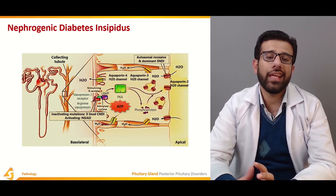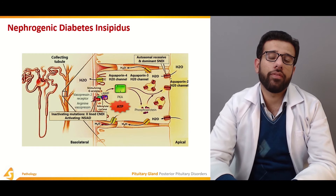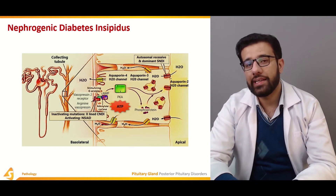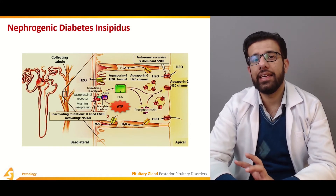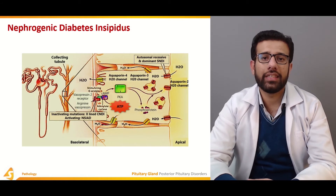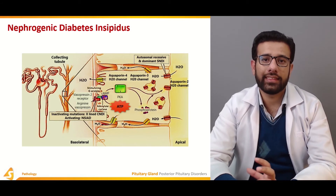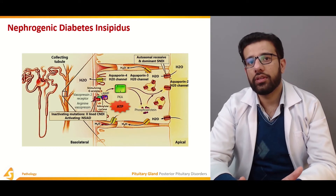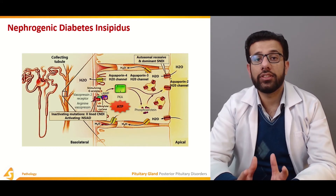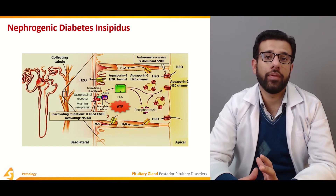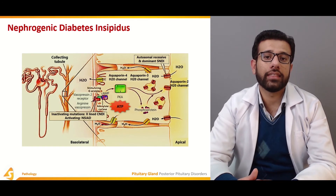The clinical picture of nephrogenic diabetes insipidus and central diabetes insipidus is more or less the same. The patient presents with polyuria and unusual thirst, and a differential diagnosis of diabetes mellitus must also be considered.